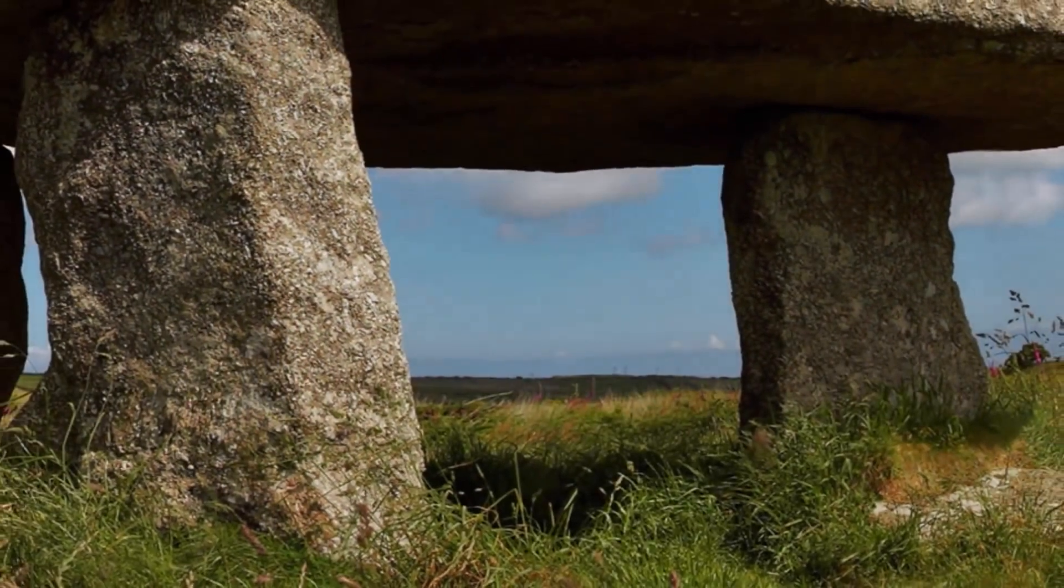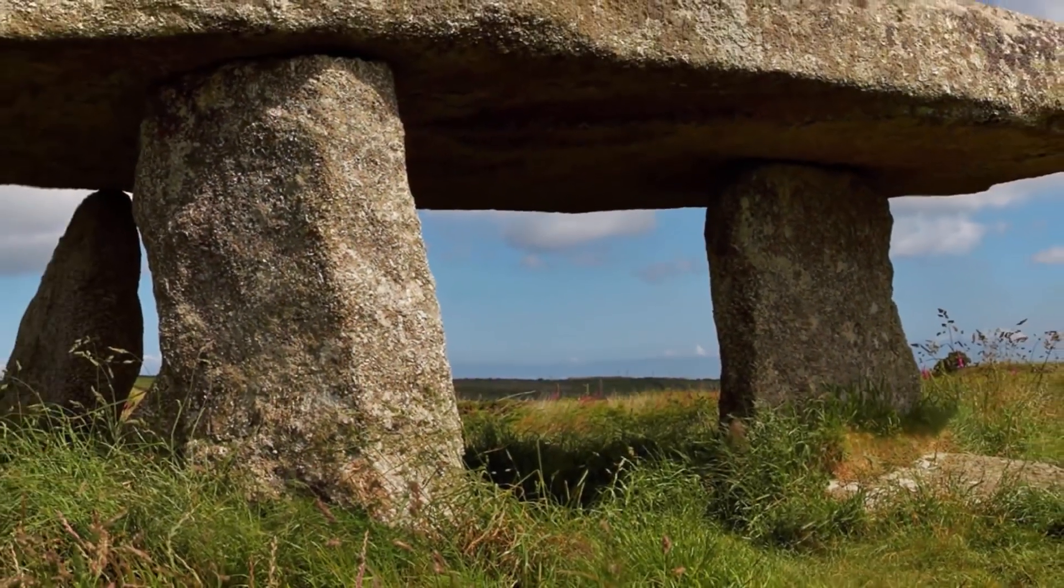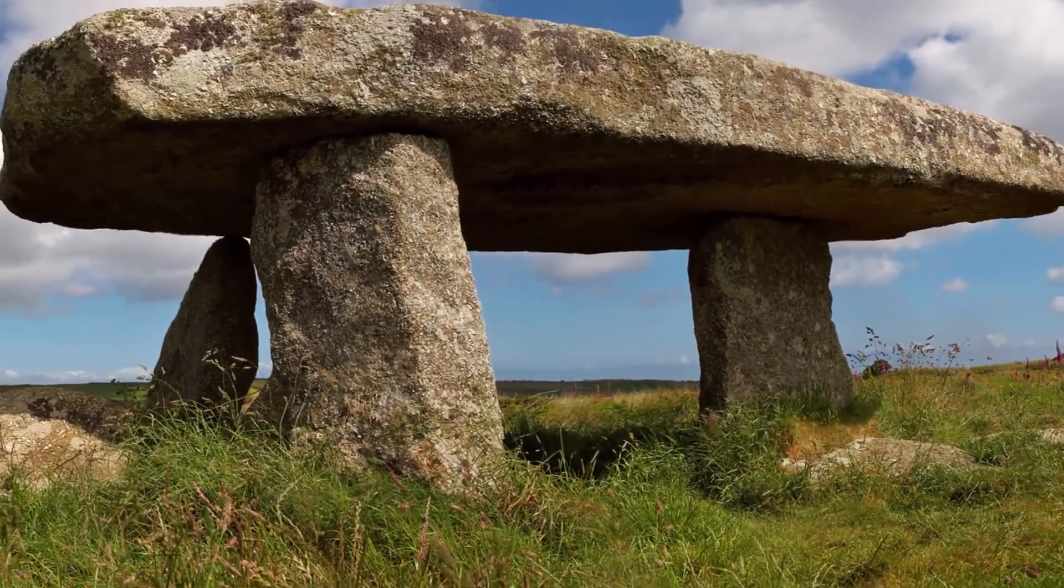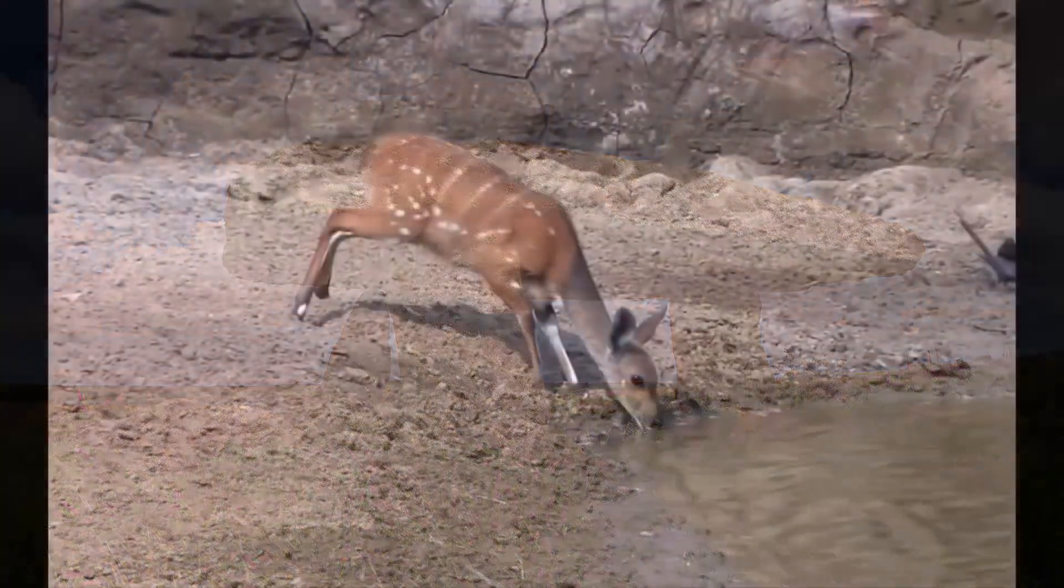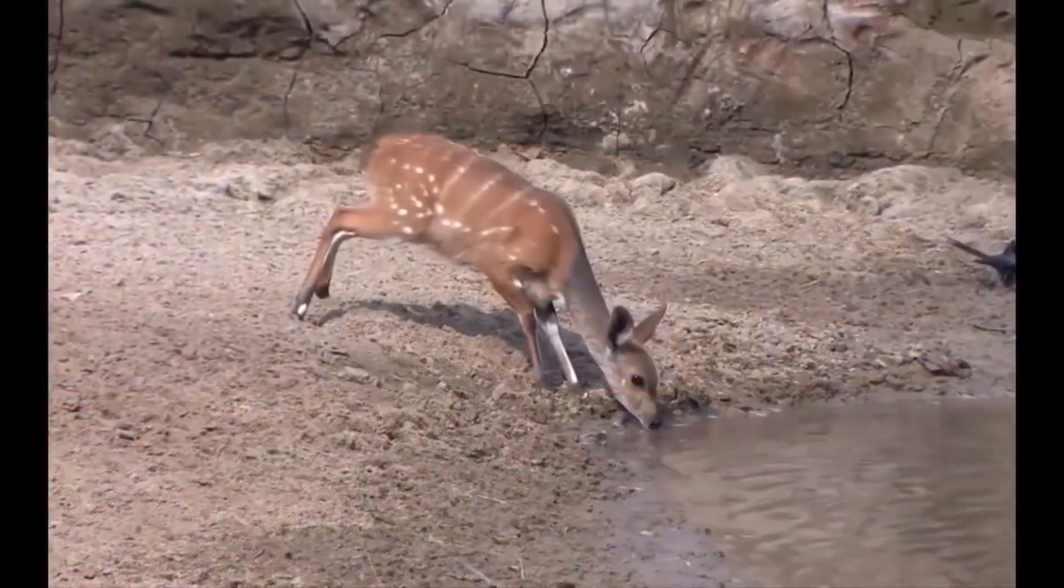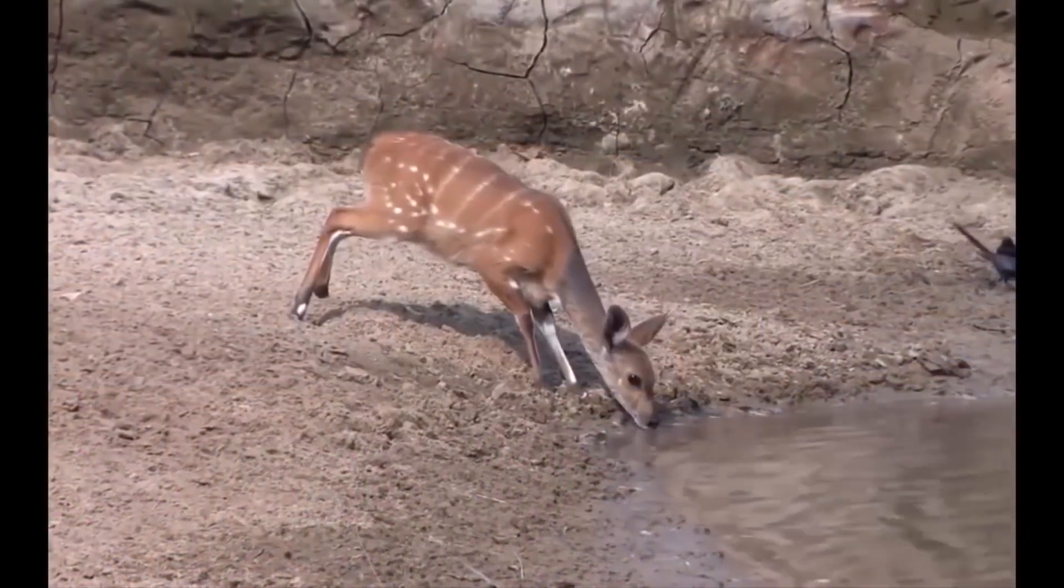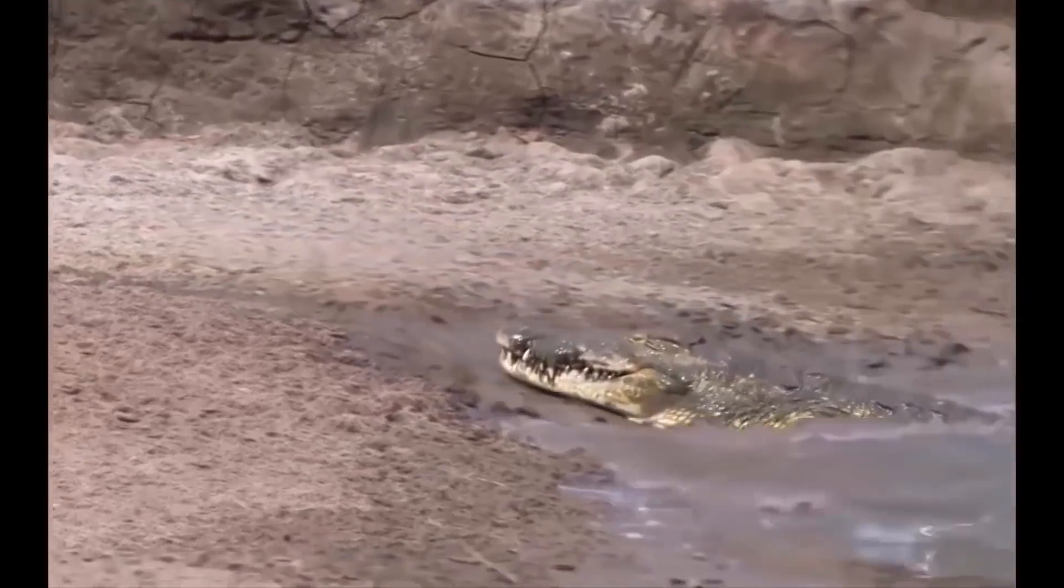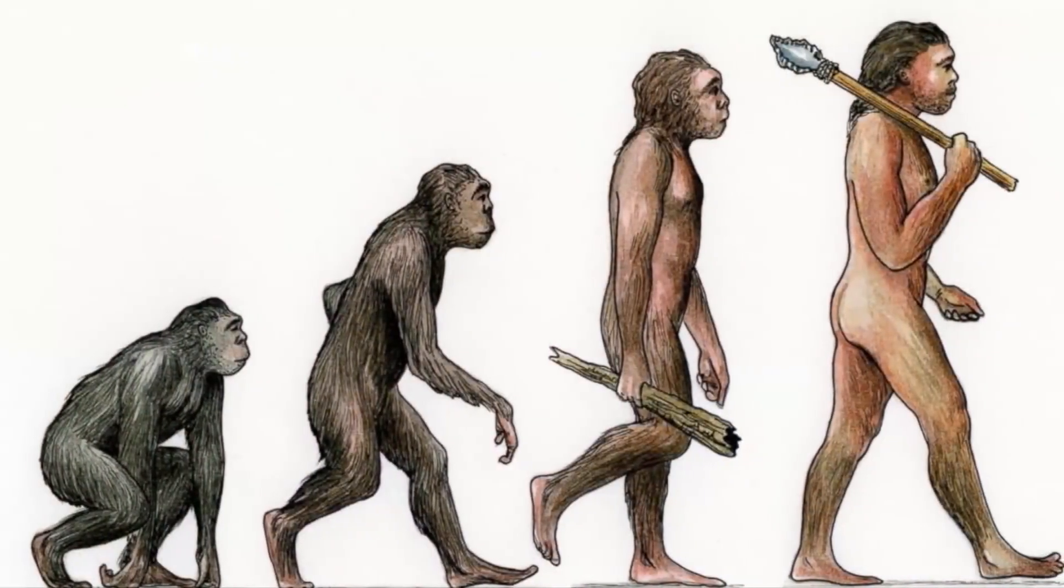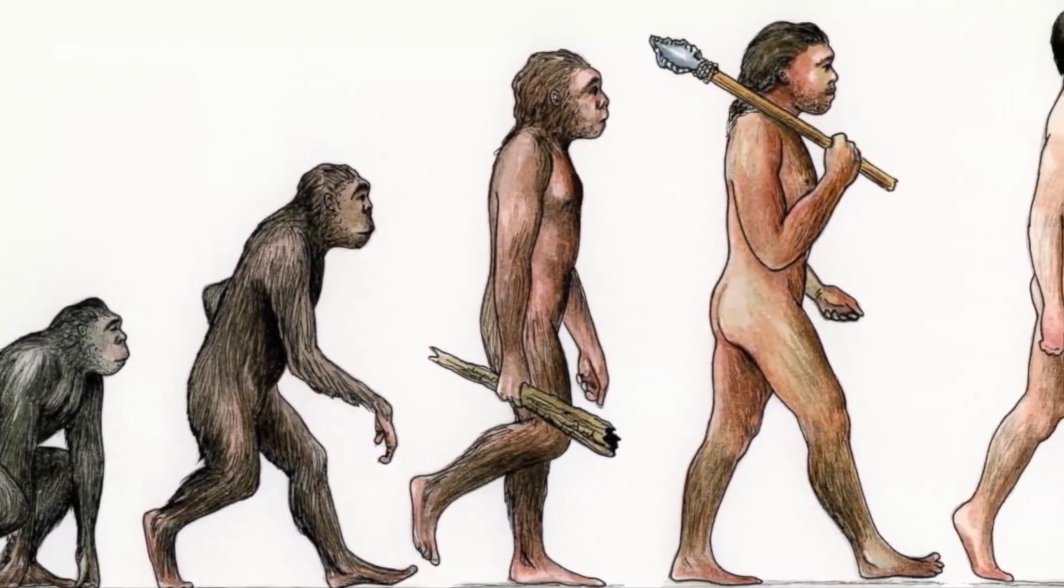Human beings started being human when they realized that they were not immortal. We are the only animal aware that sooner or later death will arrive. Animals are not aware of this. They simply feel fear against possible threats, but don't think that one day they're going to die. A thought that, when it appeared in humans, made us who we are.